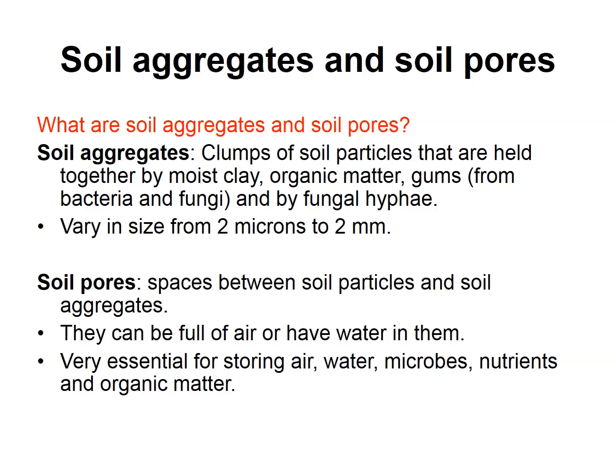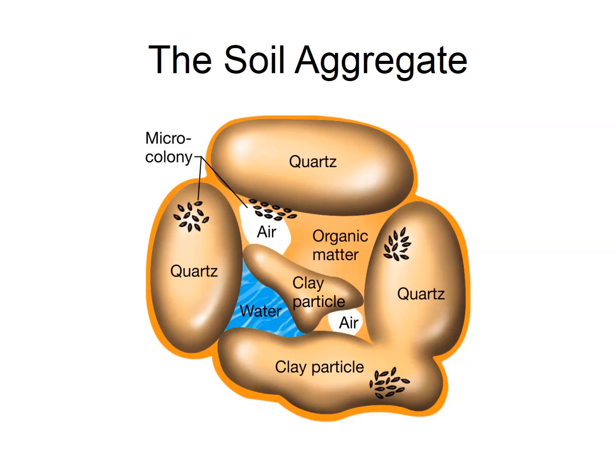For the development of good soil, we note the role played by bacteria and fungi. Soil aggregates are clumps of soil particles held together by moist clay, organic matter, and gums usually secreted by bacteria and fungi, as well as the role of fungal hyphae twisting around those particles. These aggregates vary in size — we have micro aggregates and macro aggregates, ranging from 2 microns to 2 millimeters. The pore spaces between soil particles within the aggregates are filled with either water or air, and this is essential for microbial activity, containing nutrients and organic matter.